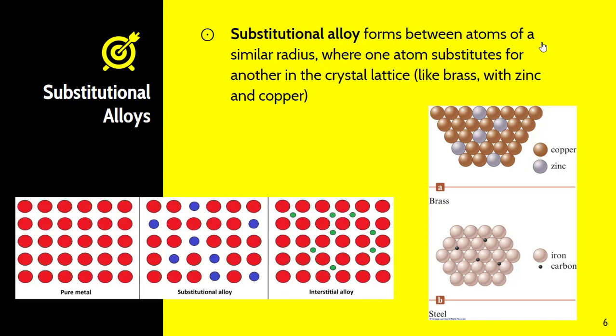So make sure you understand the difference between a substitutional alloy, one where the atoms are substituted, and an interstitial alloy where smaller atoms find their way in between the atoms of the metal. And again, all this depends on the size of the atoms that you are looking at. So keep in mind atomic radius when we're talking about alloys and metallic and ionic bonding.